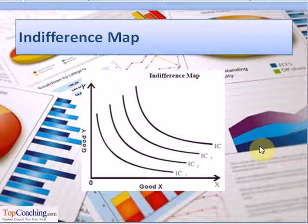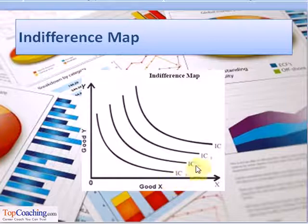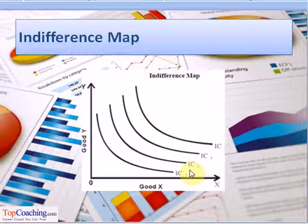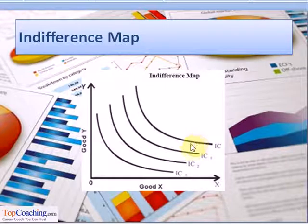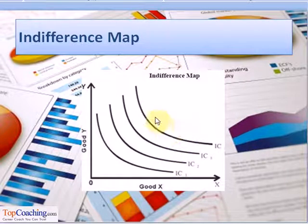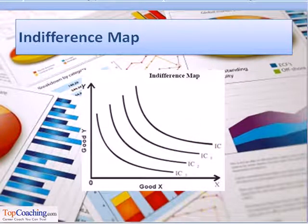The figure shown here is the indifference map, where different curves such as IC, IC1, IC2, IC3 depict different levels of satisfaction proportional to their heights. The higher curve depicts a higher level of satisfaction, and the curves below it show lower levels of satisfaction compared to it.